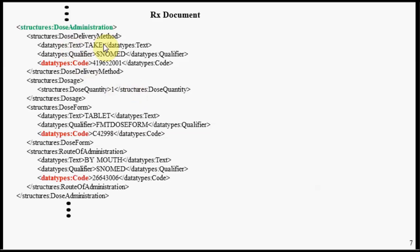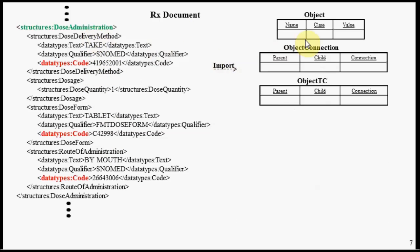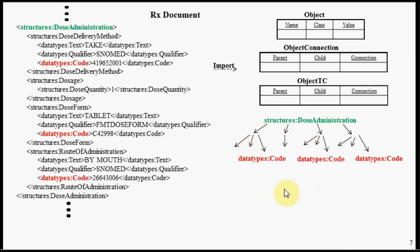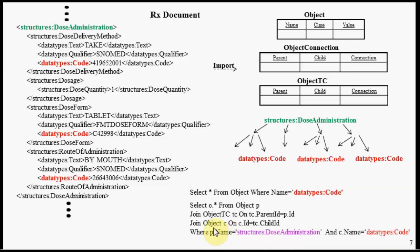Let's look at an XML document example in the pharmaceutical domain. TCSQL provides the ability to import this XML data into the corresponding soft schema tables — object, object connection, and object transitive closure. To pull out all the code tags in your XML document, you can write: SELECT * FROM object WHERE name = 'code'. To limit results to code tags within the context of a 'dose administration' parent, you use the transitive closure table to bound the context — starting from that node, find all code attributes underneath it.